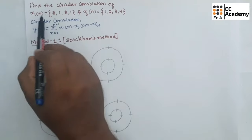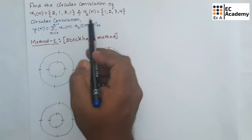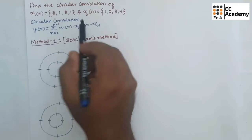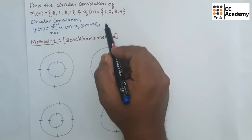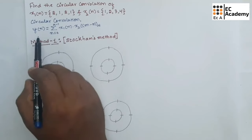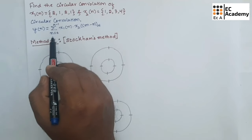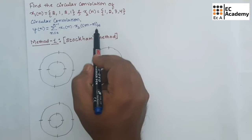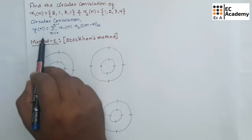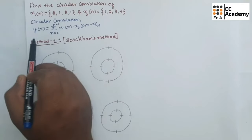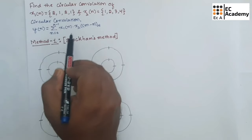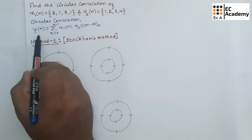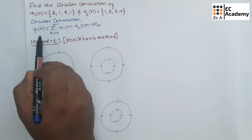Here, we need to find the circular convolution of two sequences x1 of n and x2 of n. To find the convolution, we will use different methods. The circular convolution can be given as y of n is equal to summation from n equal to 0 to N minus 1, x1 of n into x2 of n minus n mod N. This is the general formula for circular convolution, where y of n is obtained after circular convolution of x1 of n and x2 of n — the new sequence after circular convolution.